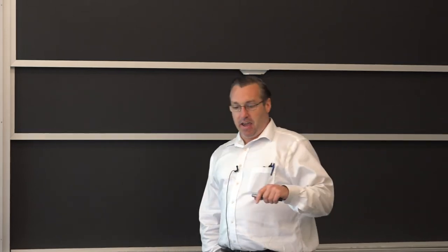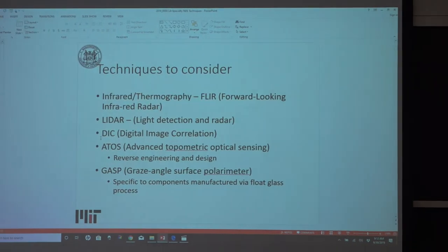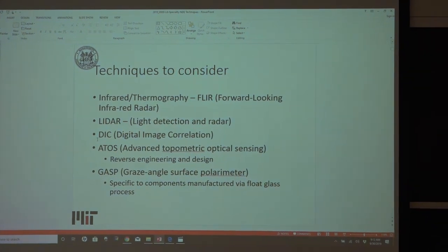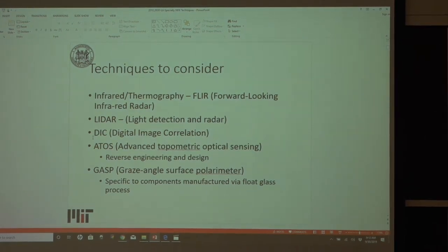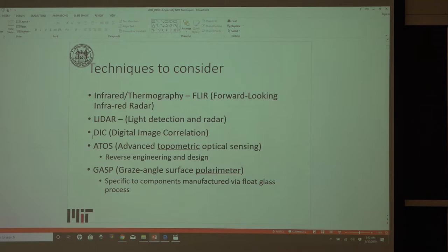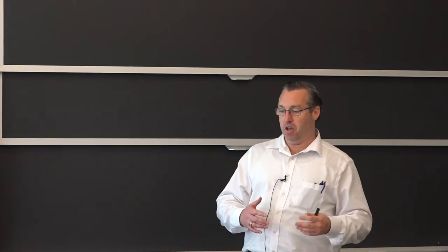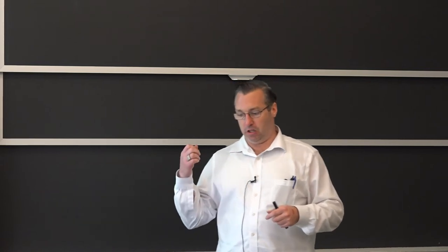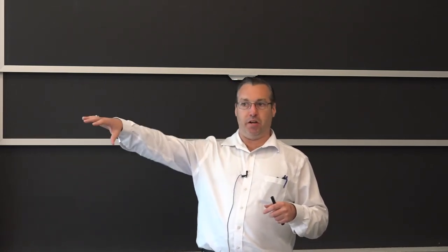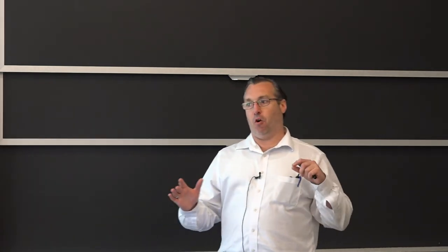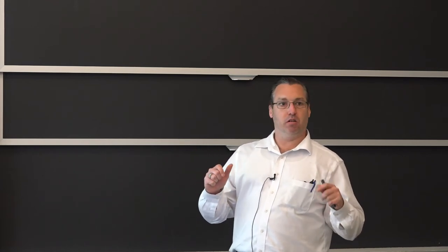The techniques we're going to discuss today include infrared thermography — I had brought in a FLIR, which is forward looking infrared, and we passed that equipment around earlier. Additional techniques include LIDAR, which is light detection radar; digital image correlation; ATOS, which is advanced topometric optical sensing, used for large structural components and in particular for reverse engineering. And the last technology is referred to as GASP — grazing angle surface profilometers — which are specific to glass, including float glass manufactured components like windows or other architectural structural glass designs.